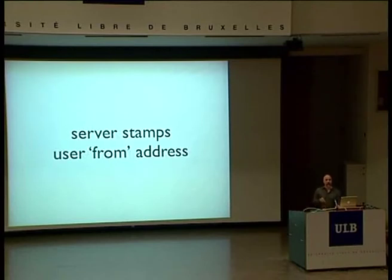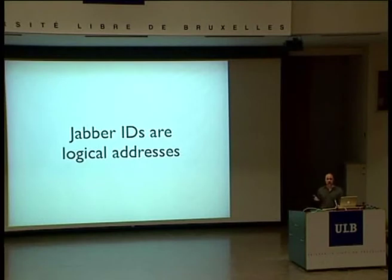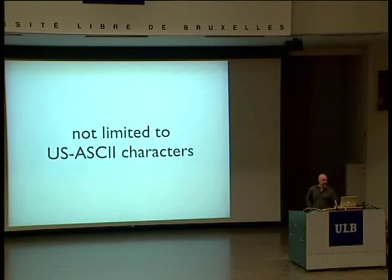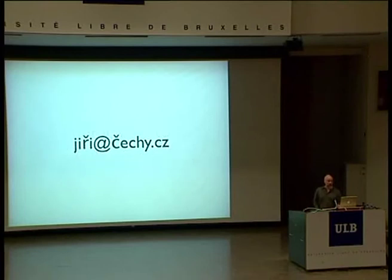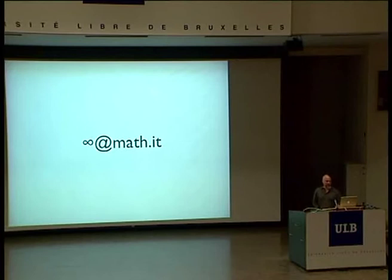The server asserts what the from address is, so you can't claim to be service@paypal.com. The server informs other people what your sender address is. So what do these Jabber IDs look like? They're logical addresses that look like email addresses — Romeo at montague.net, Juliet at capulet.com. But they're not limited to ASCII characters. Unlike email, you can have Yichi at chahi.cc, Plato at hellas.gr, Thai addresses, Japanese addresses. The possibilities are essentially endless, and you see people with Jabber addresses like this.